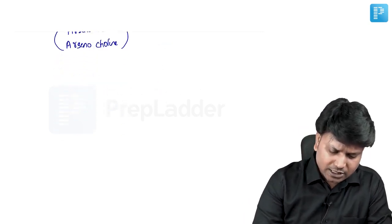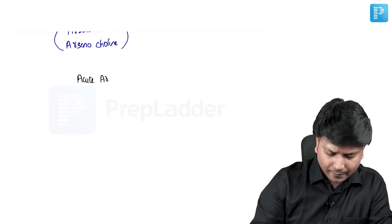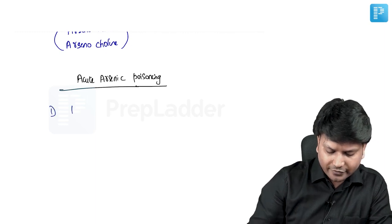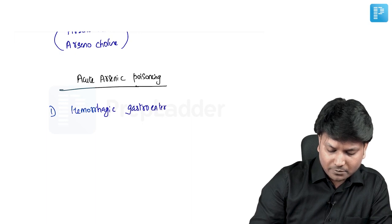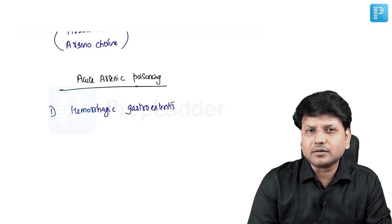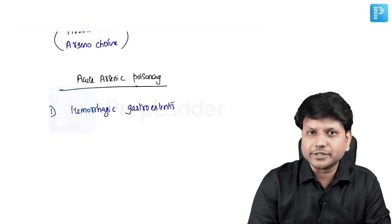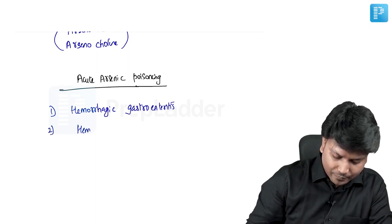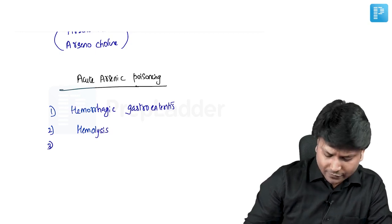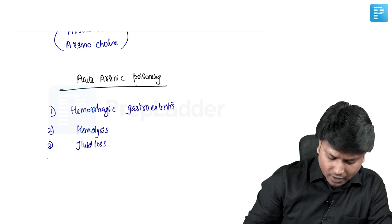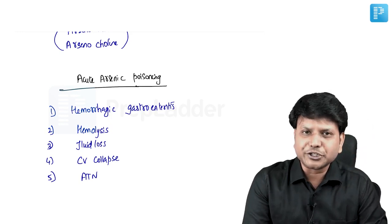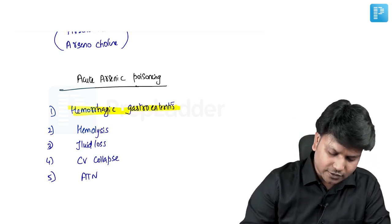In acute arsenic poisoning, the significant clinical feature is hemorrhagic gastroenteritis. On post-mortem, we see red velvety stomach mucosa. Arsenic also causes hemolysis, diarrhea, fluid loss, cardiovascular collapse, and acute tubular necrosis. Hemorrhagic gastroenteritis is the most important feature of acute arsenic poisoning.